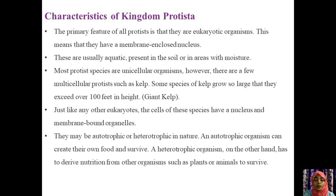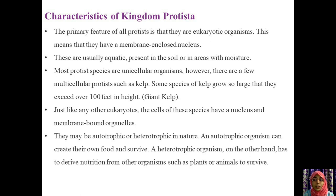Multicellular protists do not have highly specialized tissues or organs. There are thought to be between 60,000 to 200,000 protist species, many yet to be identified. This simple cellular-level organization distinguishes protists from other eukaryotes such as fungi, animals, and plants. Protists live in almost any environment that contains liquid water.